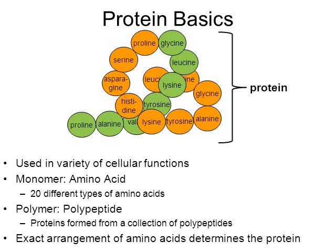You might have heard of a disease called sickle cell disease. Because of one single wrong amino acid, red blood cells are misshapen — they almost look like bananas in people who have sickle cell disease. It can be a very life-threatening disease, all because of the wrong placement of a single amino acid.